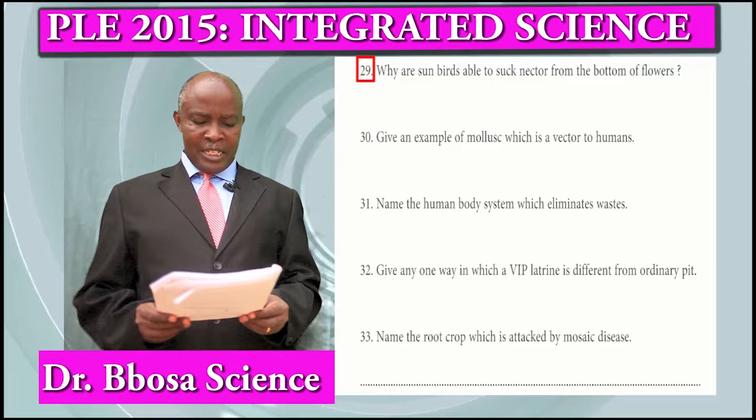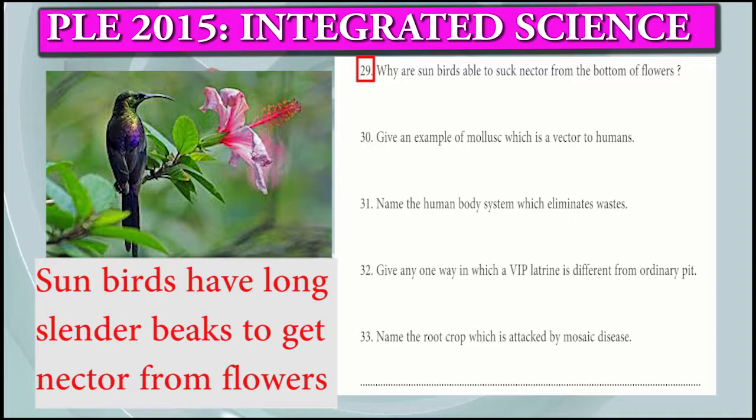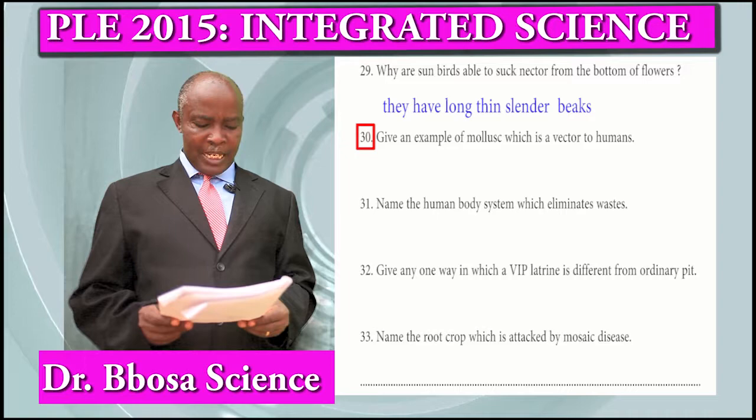Question 29: Why are sunbirds able to suck nectar from the bottom of flowers? They have long slender beaks.